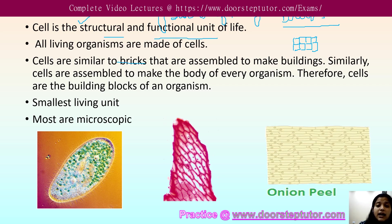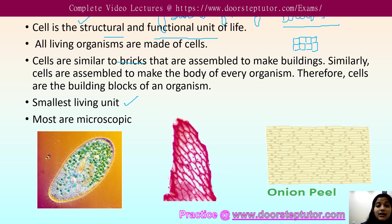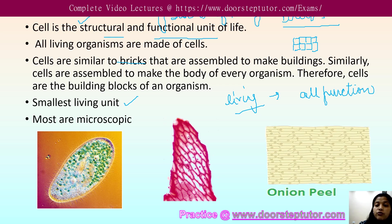Similar to bricks, cells are assembled to make the buildings of our body. They are the smallest living unit — you can break a cell and isolate cell organelles or the nucleus. However, a cell is the smallest living unit that is able to perform all its functions properly and efficiently, and that is what is categorized as a cell.